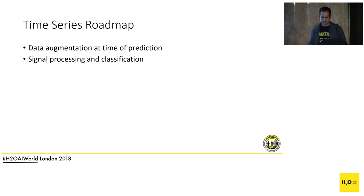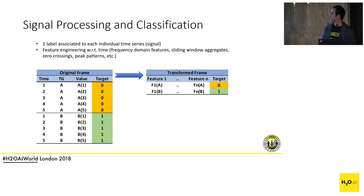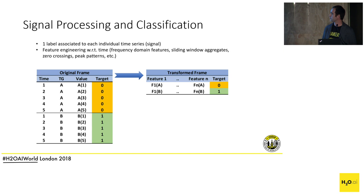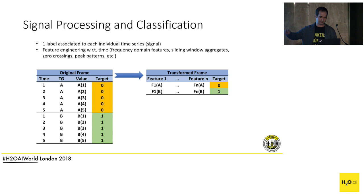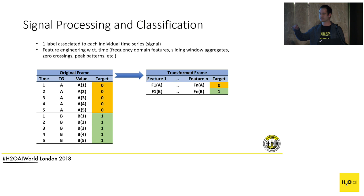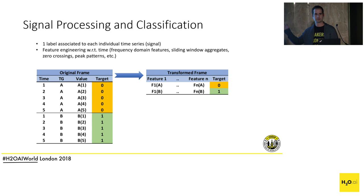Another planned feature is signal processing and classification. This is a different problem domain: instead of having a label for each time point, you have one label per time group — for example groups A and B where A is a bad signal and B is a good signal. To build a model, you transform the data and create features on each time series individually: going into the frequency domain, extracting features, doing sliding window aggregates, counting zero crossings, extracting peak patterns, etc. It's a big domain that will be very useful for some users.